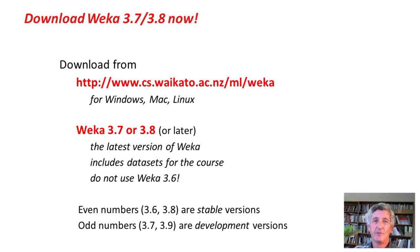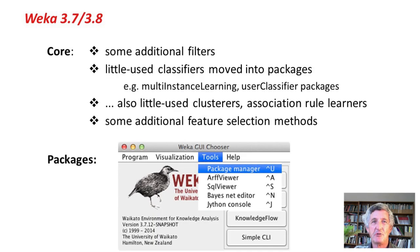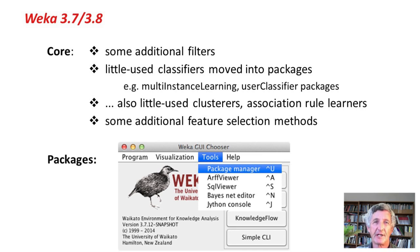What's new in this version: in the core, we have some additional filters, and some things have been stripped out. Some little-used classifiers have been stripped out and moved into packages, along with little-used clusterers and association rule learners. Also in the core there are some additional feature selection methods. The most important innovation in the new WEKA systems is the package system.